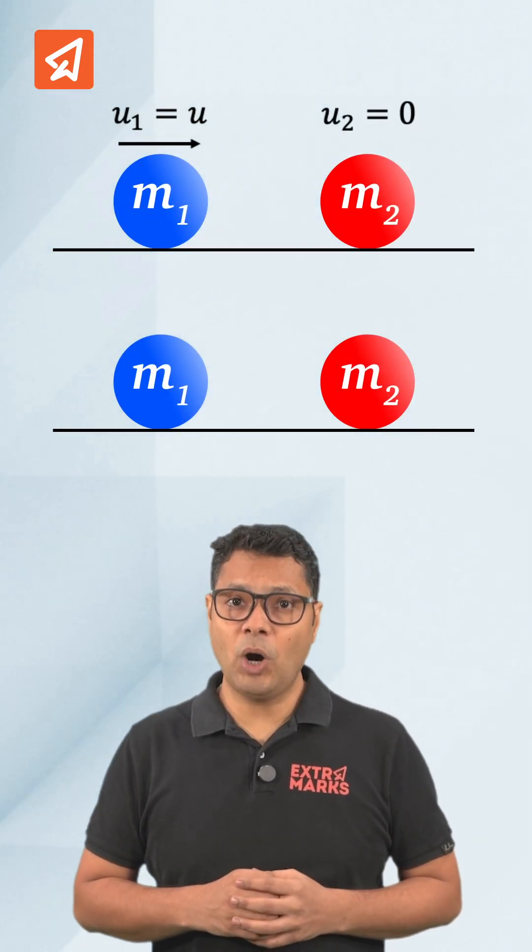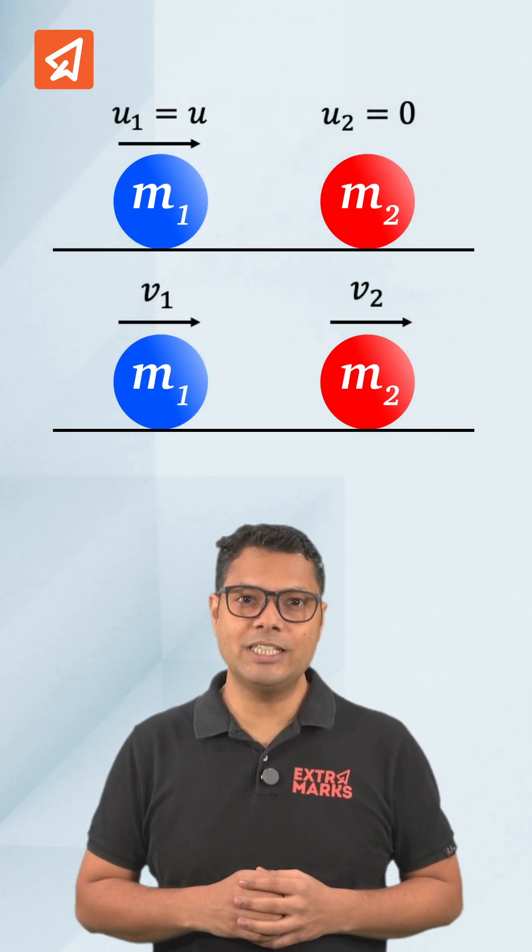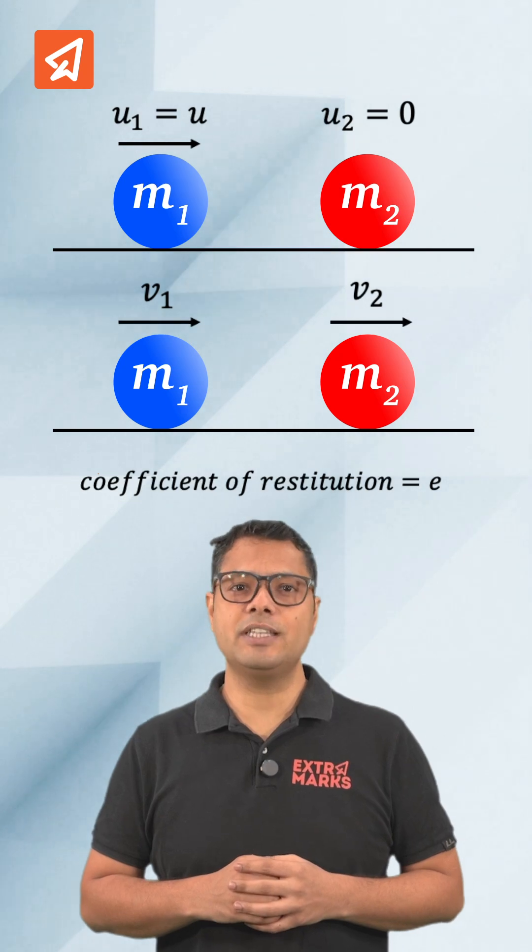We have to calculate the velocities of the balls V1 and V2 after the collision if the coefficient of restitution is e.